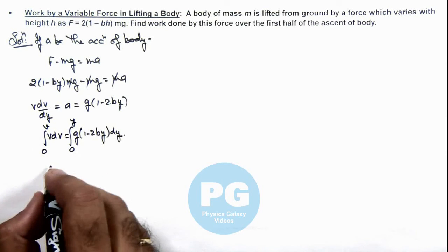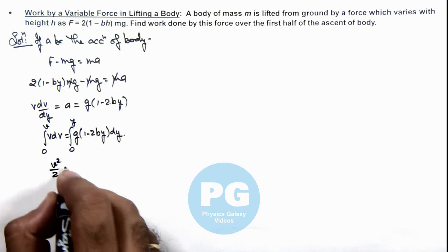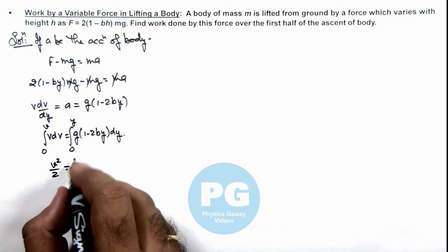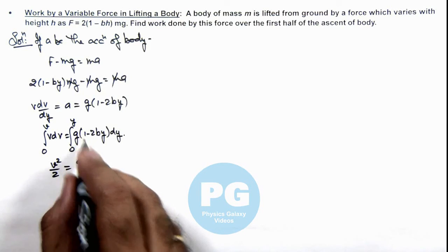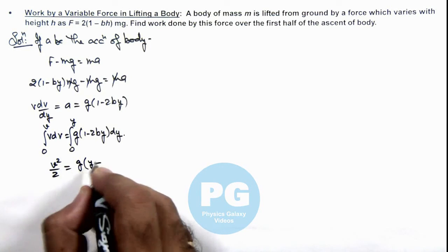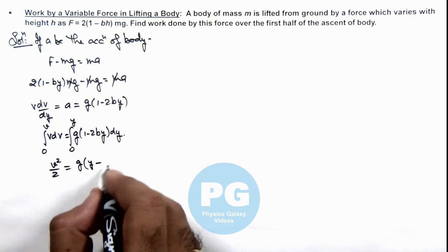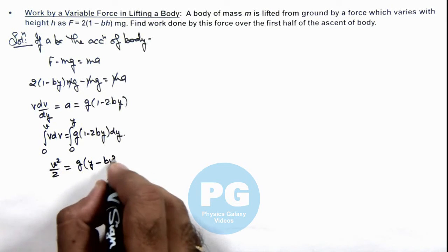Then left hand side will give us v²/2 and right hand side this will be g times, integration of 1 will be y minus integration of y is y²/2 so this is by².